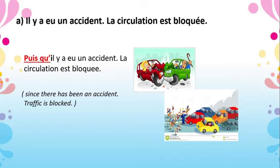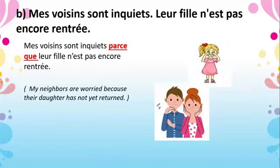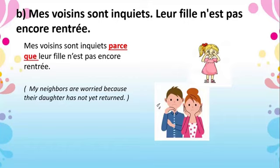Clear, children. With the help of the expressions of the reason, you can combine the two sentences. Look at B: my neighbors are worried; their daughter has not yet returned. 'Mes voisins sont inquiets. Leur fille n'est pas encore rentrée.' You can combine these two sentences with the help of parce que: 'Mes voisins sont inquiets parce que leur fille n'est pas encore rentrée.' This parce que can be used between the two sentences.